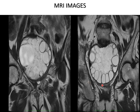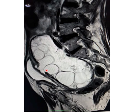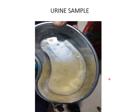T2-weighted MRI images showed a large well-defined cystic lesion with multiple daughter cysts in solid matrix located in the midline within the pelvic region. T2-weighted sagittal image shows fistulous communication between the cyst and the posterior wall of the urinary bladder. Passage of hydatid cysts in urine was seen in the urine sample.